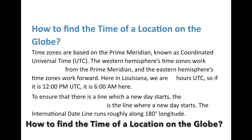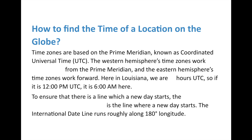So how do you find the time of a location on the globe? Time zones are based on the Prime Meridian, which is Coordinated Universal Time — UTC. The old term was Greenwich Mean Time. UTC is the official time that everything else is based off of, based on the time at the Greenwich Observatory in London, England. The western hemisphere's time zones work backward from the Prime Meridian, and the eastern hemisphere's work forward. Here in Louisiana, we're at negative six hours UTC unless we're in daylight saving time, when we'd be minus five because we moved the clock forward. UTC ignores daylight saving time because many places in the world don't observe it. So if it's 12 p.m. UTC, it's 6 a.m. here because 12 minus 6 is 6.